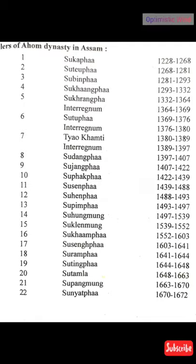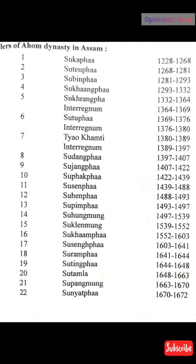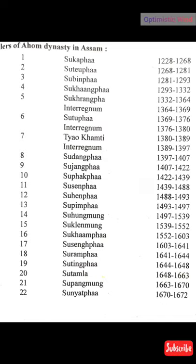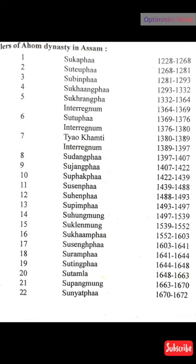Number three is Subinfa, 1281 to 1293. Number four is Sokhangfa, 1293 to 1332. Number five is Sokrangfa, 1332 to 1364. Then comes an interregnum period — meaning at that point there was an absence of king; perhaps the king had died and the princes were too young to hold the throne. The interregnum period was 1376 to 1380. Number seven is Tayao Khamdi, 1380 to 1389, followed by another interregnum period.